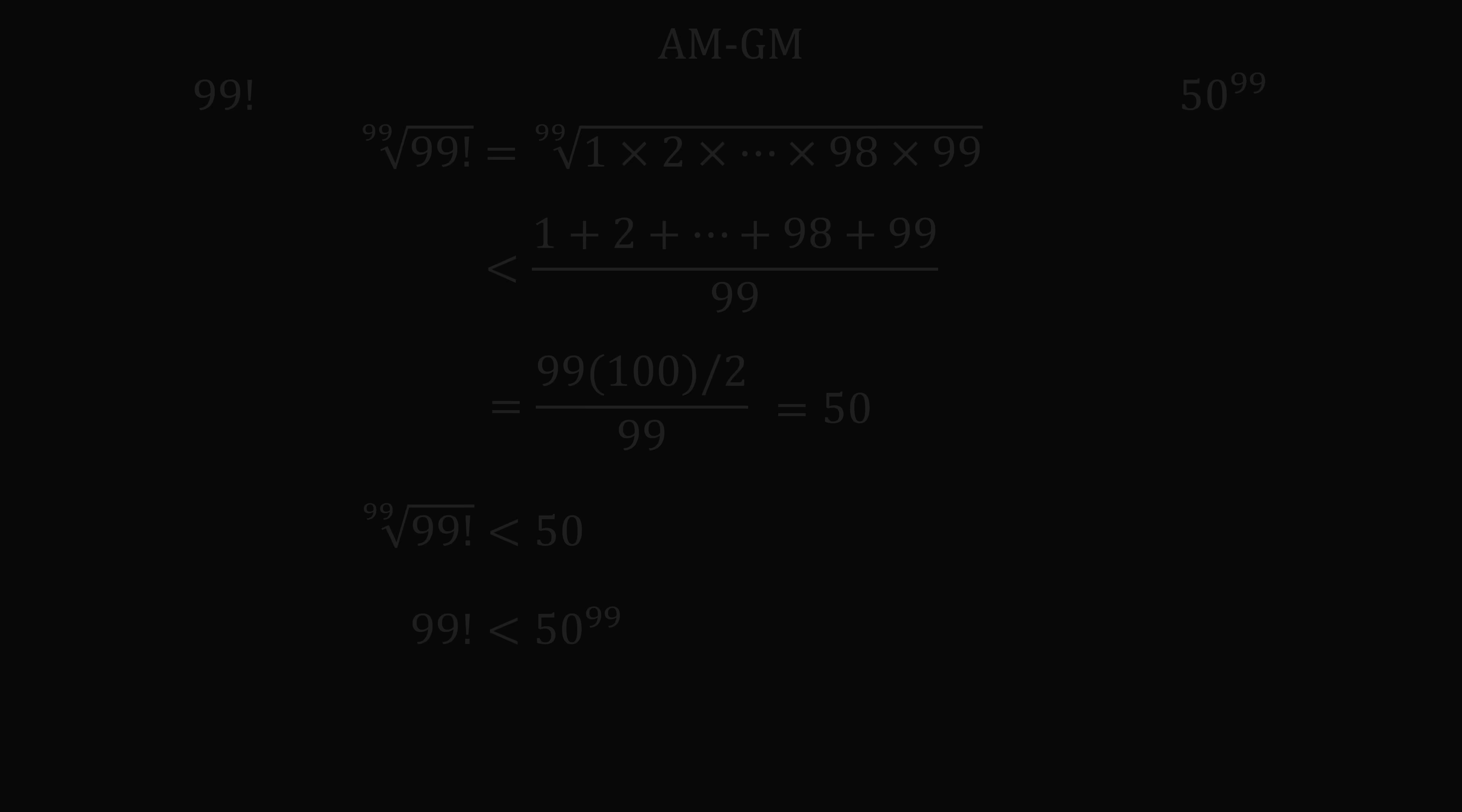Now I just want to close the video with a general point. Let's compare x factorial with 50 to the power of x. In this example, 99 factorial was less than 50 to the power of 99, and it was actually much less. So you might be thinking that x factorial is less than 50 to the power of x. But in fact,